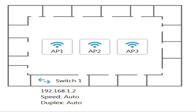Let's check the default diagram for the simulation. As you can see on the screen, there are three access points: access point one, access point two, and access point three. There is also a switch, and the default gateway is 192.168.1.2. Speed is auto and duplex is auto.